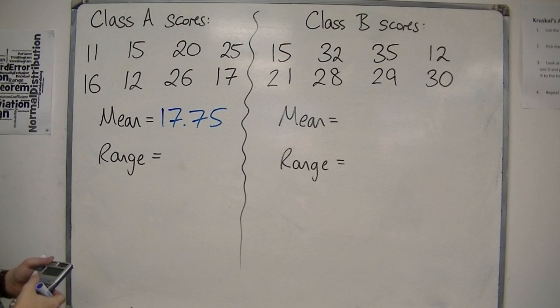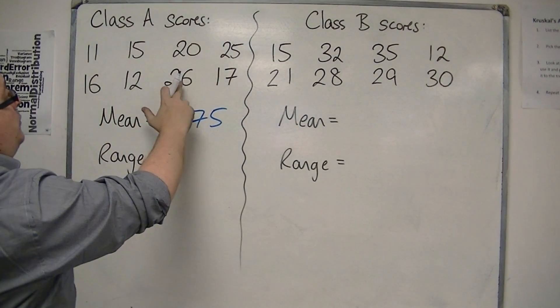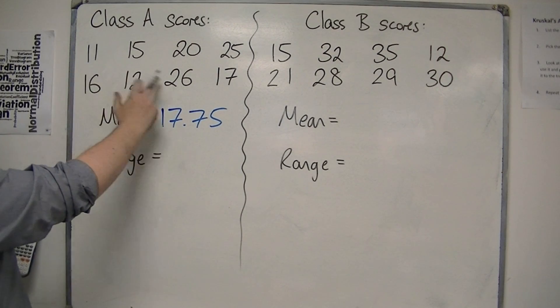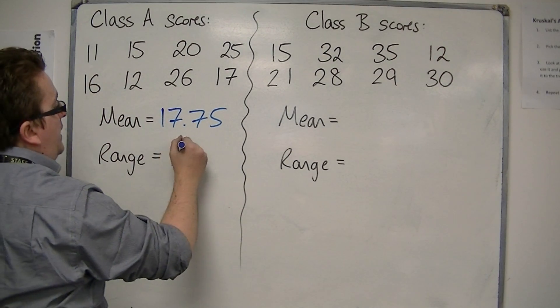Then the range is the largest, which is 26, take away the smallest, which is 11, so 26 take away 11 is 15.